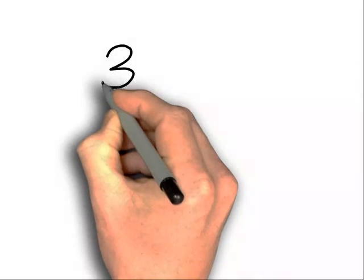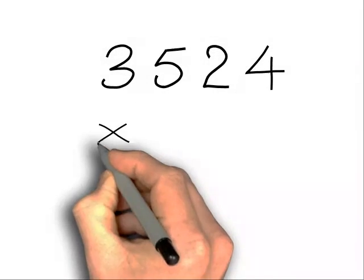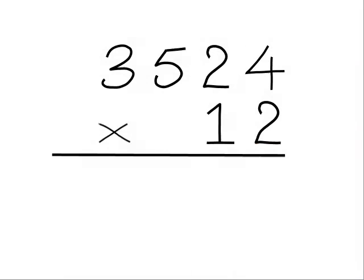We'll look at 3524 times 12. First thing we do is write a zero on the left-hand side in front of the number.